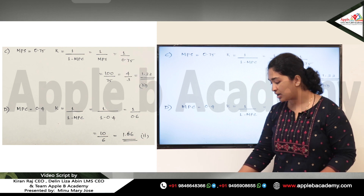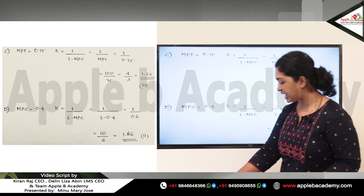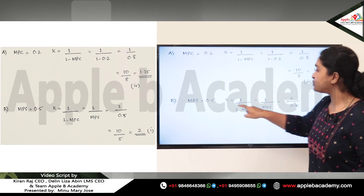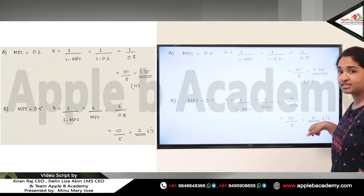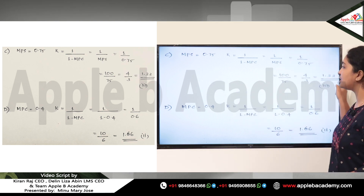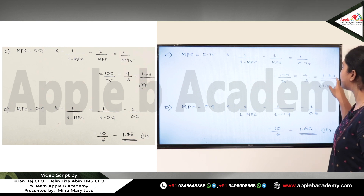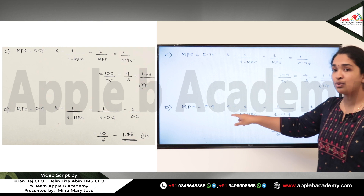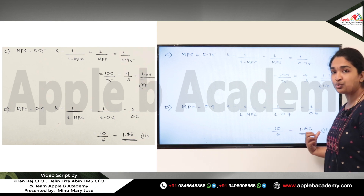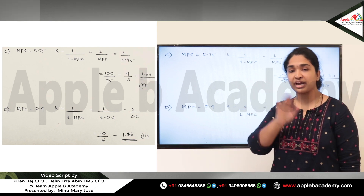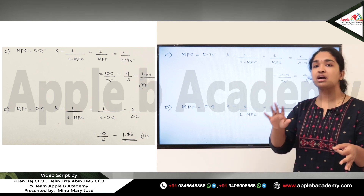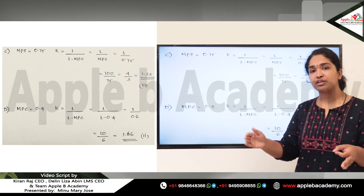To summarize: Option A matches with Option 4 (MPC=0.2 → 1.25), Option B matches with Option 1 (MPS=0.5 → 2), Option C matches with Option 3 (MPS=0.75 → 1.33), and Option D matches with Option 2 (MPC=0.4 → 1.66). List 1 gave us the values of MPC and MPS, which we matched with their respective multiplier values.